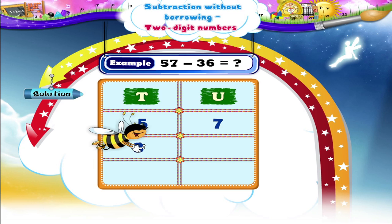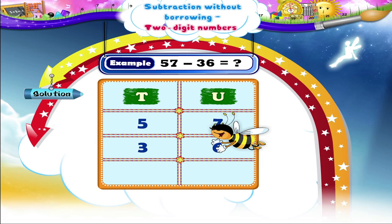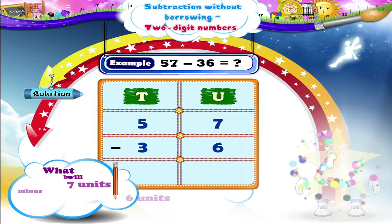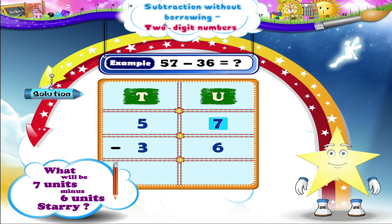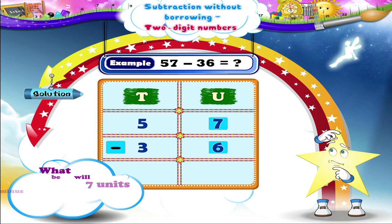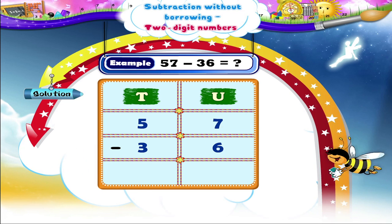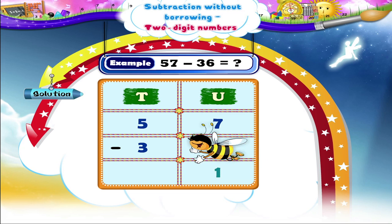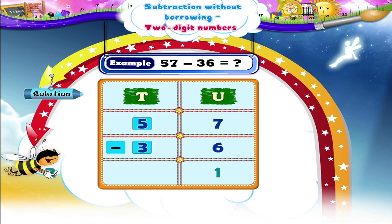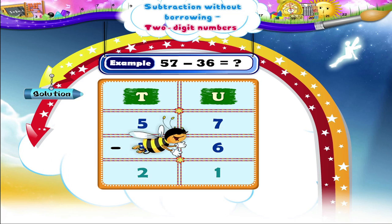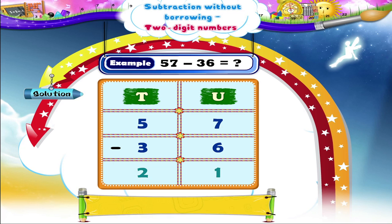What will be 7 units minus 6 units, Starry? Yes! 1 unit. Now, we shall subtract 3 tenths from 5. We get the answer 2 tenths. So, on subtracting 36 from 57, we get the answer 21.